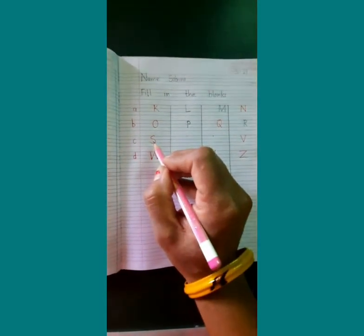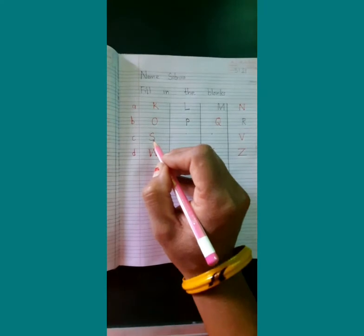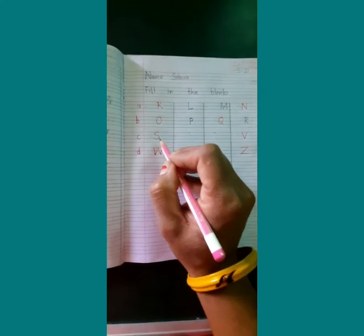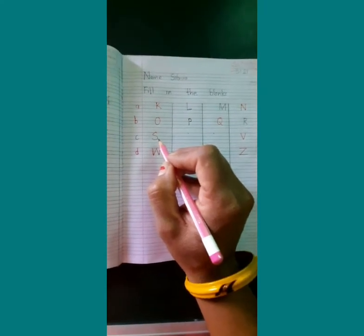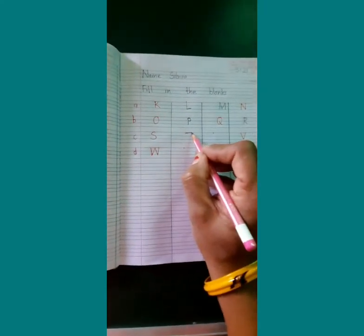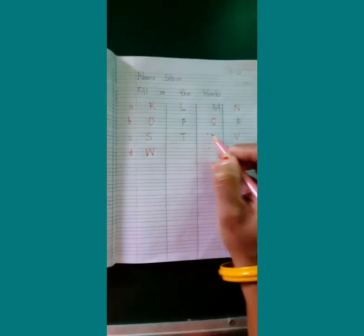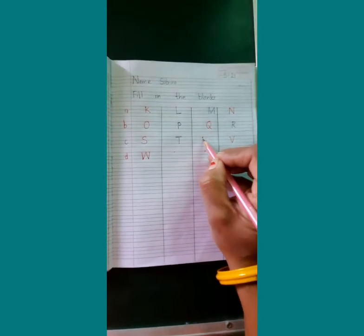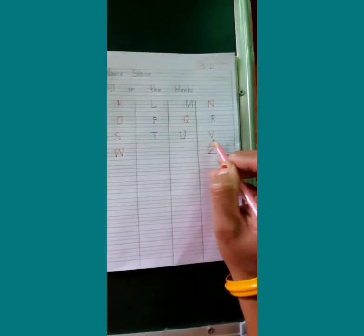Now children we will come to the next line. What letter is this children? S. After S children we will write T. After T children we will write U. Now V is written here children.